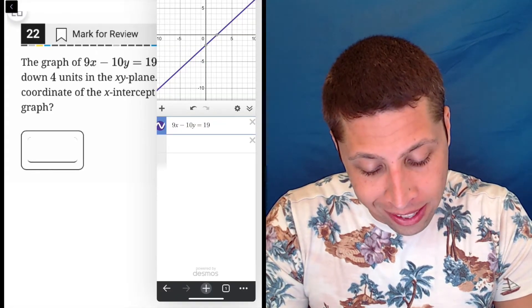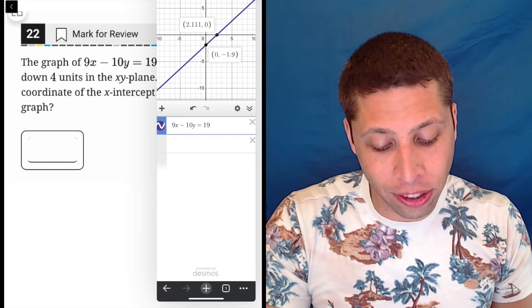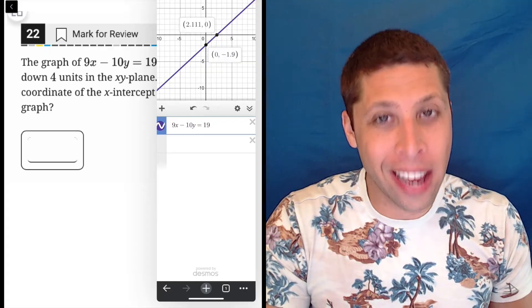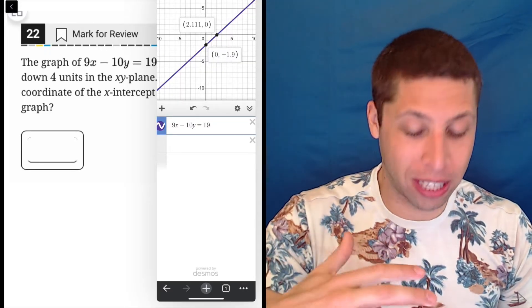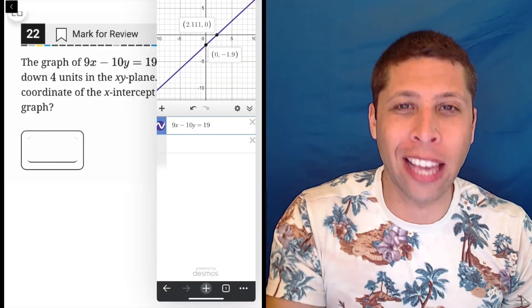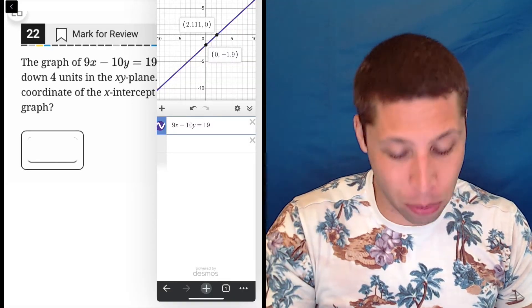The problem is it's not like the Y or X intercepts are convenient numbers, right? They're these decimals. So I can't just visually see what's going to happen if I move that four down. My brain can't really handle like the negative 5.9.